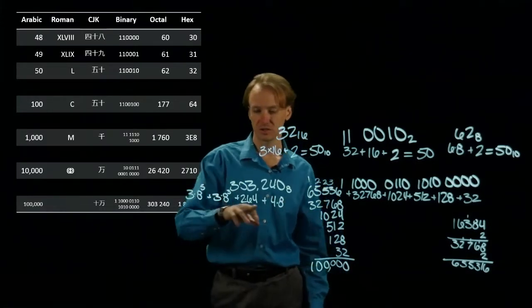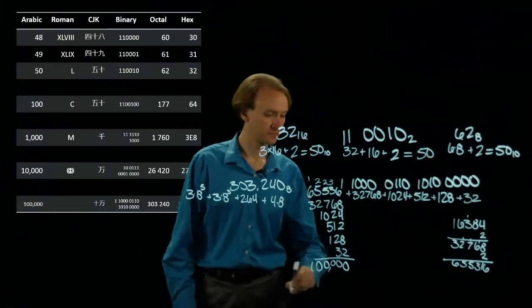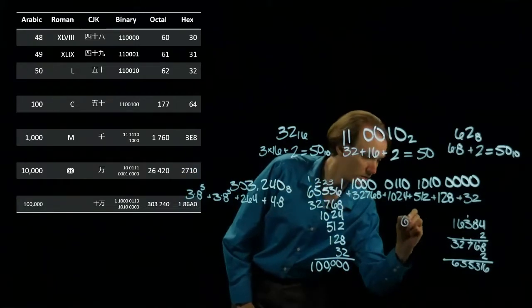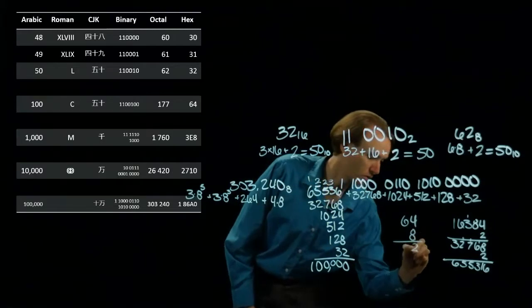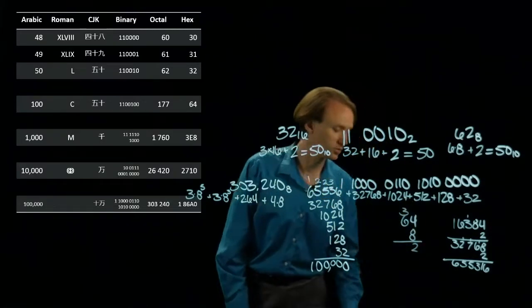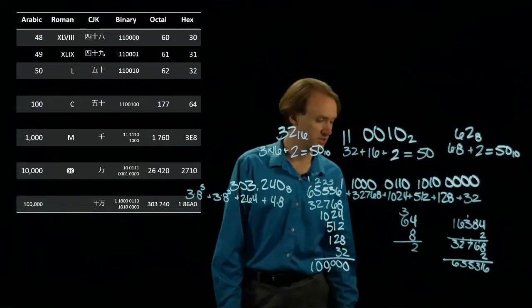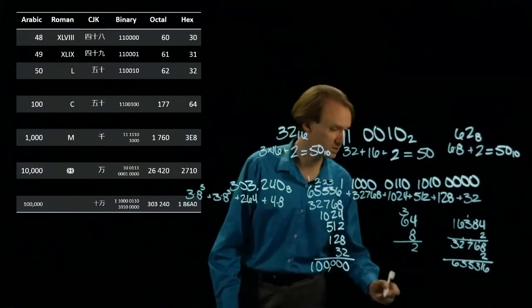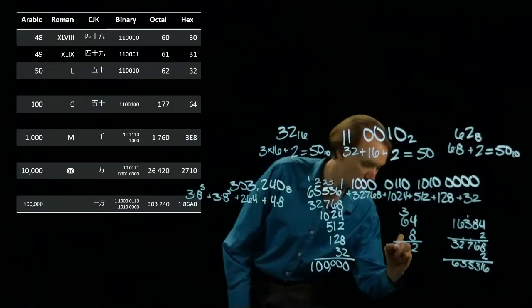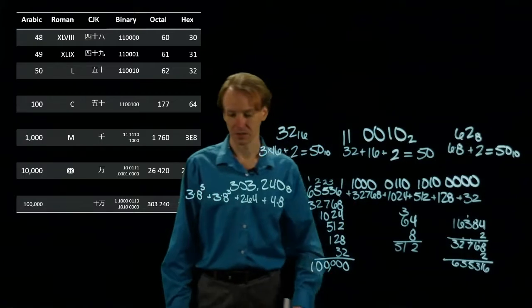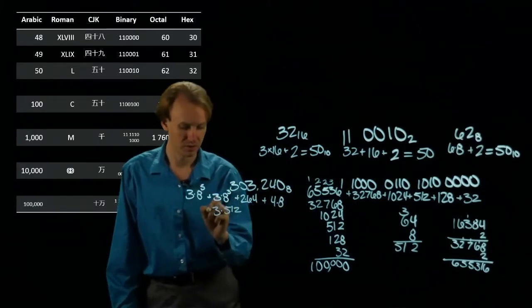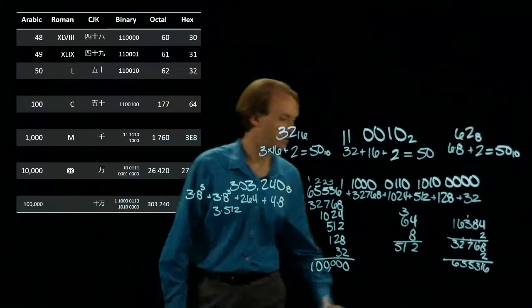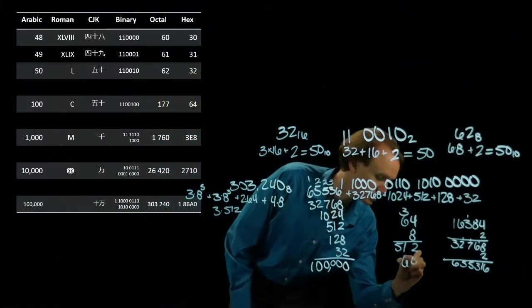So 8 cubed is just 64 times 8. 8 times 4 is 32. 8 times 6, 6 times 8 is 48. Plus 3 gives me 51. So I have 3 times 5, 12. And then I have 8 to the 5th, which means I'll multiply this by 64.